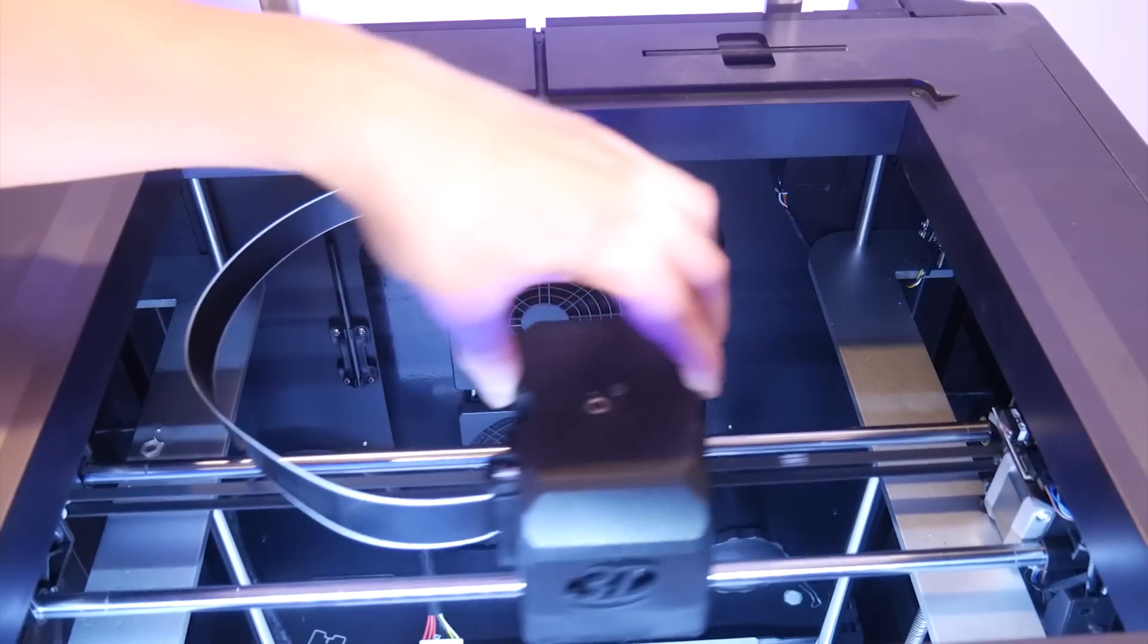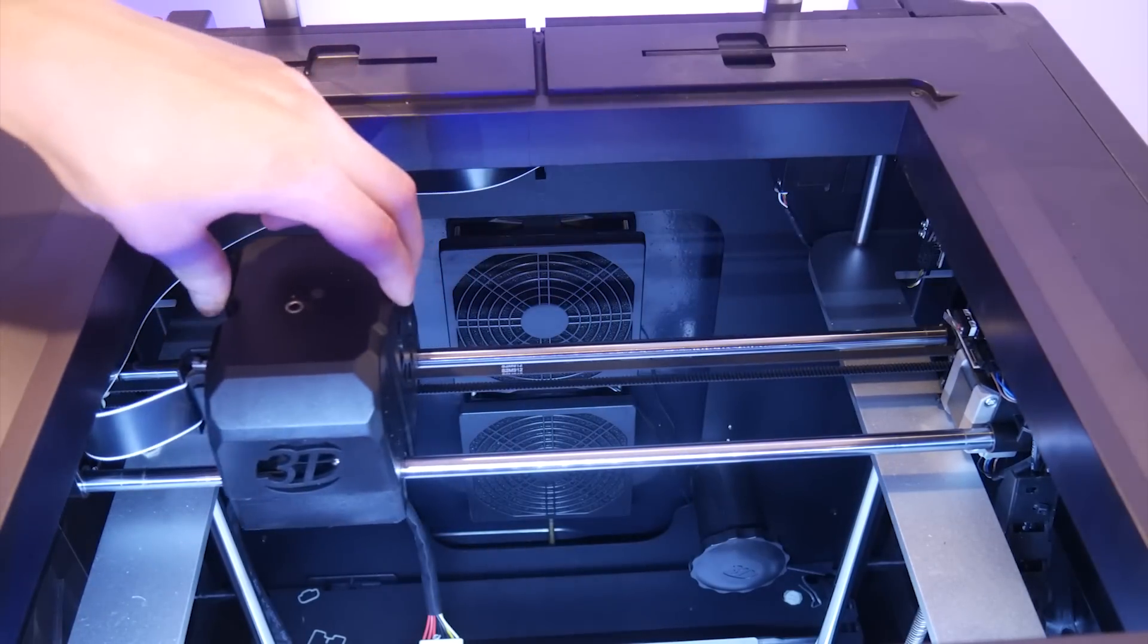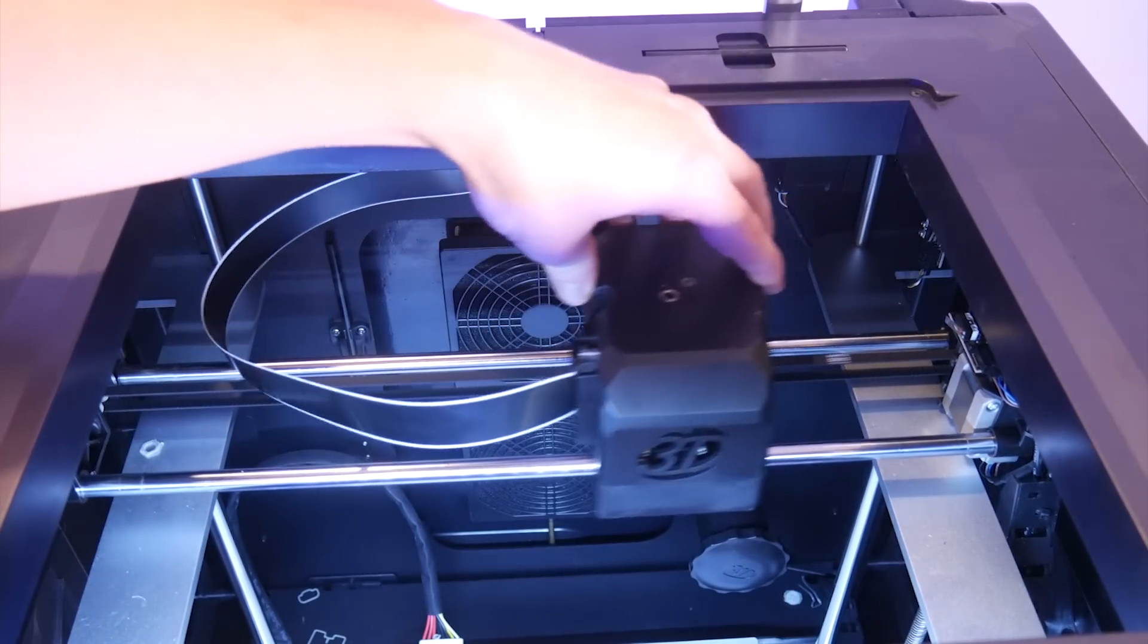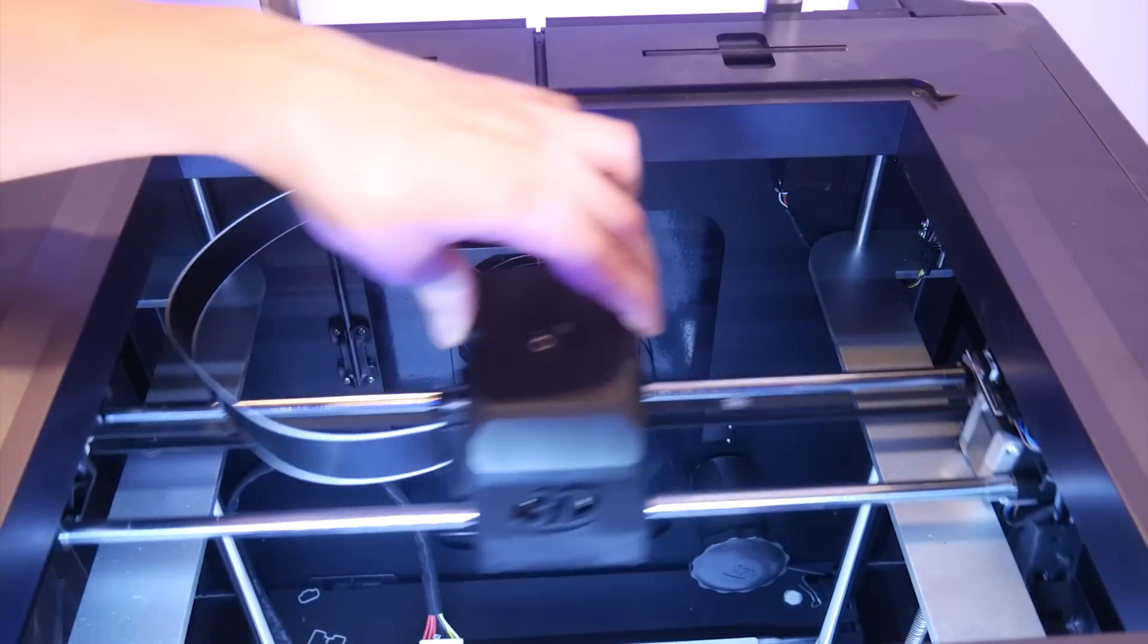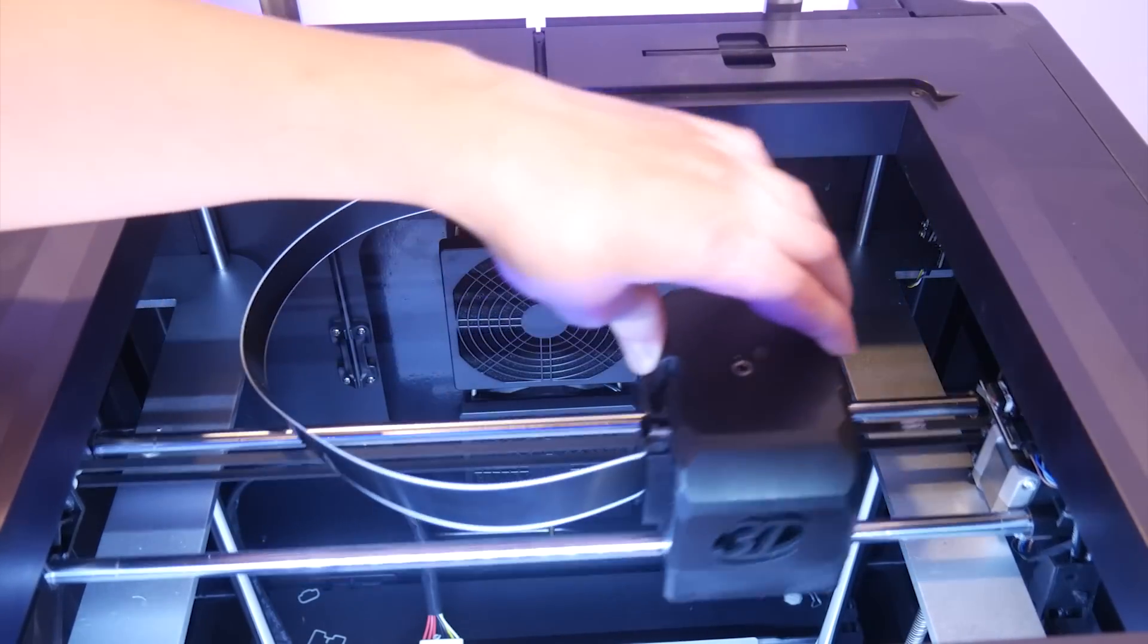One thing I noticed right away was how smooth the X-Y axis moved manually. Not the most precise test, but something I like to do to check for binding on any machine. The X and Y axis glide around effortlessly, even with the belts properly tensioned.